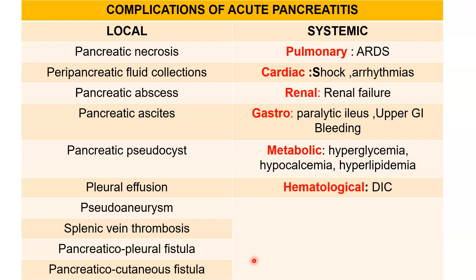A patient showing clinical deterioration despite aggressive fluid resuscitation should be assessed for local complications such as pancreatic necrosis, pancreatic abscess, pancreatic ascites, or pseudocyst, as well as splenic vein thrombosis or fistulas like pancreatic pleural fistula or pancreatic cutaneous fistula. All patients should be monitored for respiratory distress, shock, ARDS, and DIC. They commonly have hyperglycemia, hypocalcemia, and hyperlipidemia. Abdominal distension usually occurs due to paralytic ileus, and any evidence of GI bleed indicates poor prognosis. Renal perfusion should be maintained as these patients can also develop renal failure.